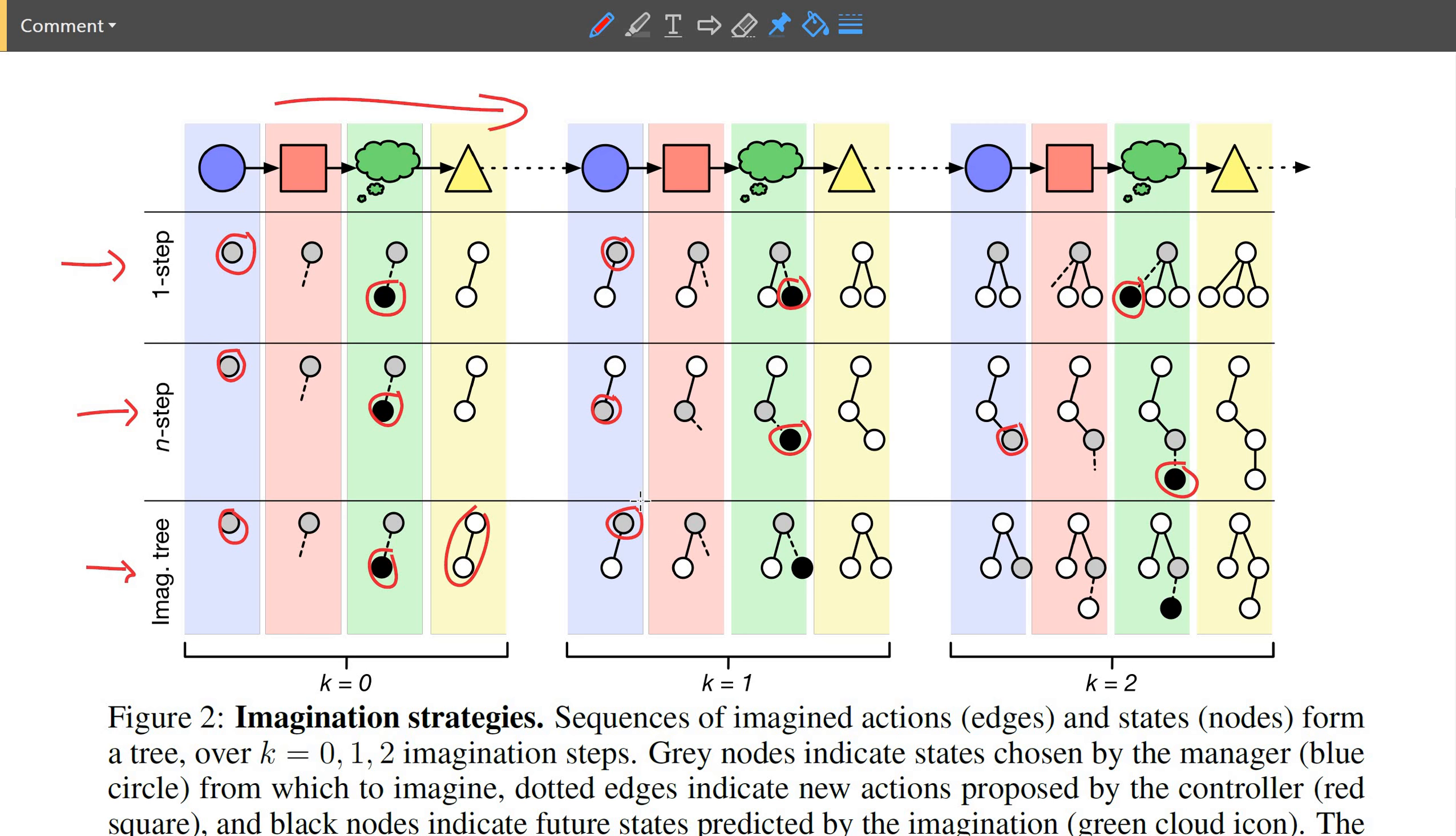You imagine an action on top of it, but then you can select any of these two nodes to imagine from. And here, again, the first is selected and action is imagined. Then you have three nodes. You can choose any of those where you want to imagine the next step. And here in this example, the manager selects this state right here and decides to imagine another action on top of it until it is satisfied.